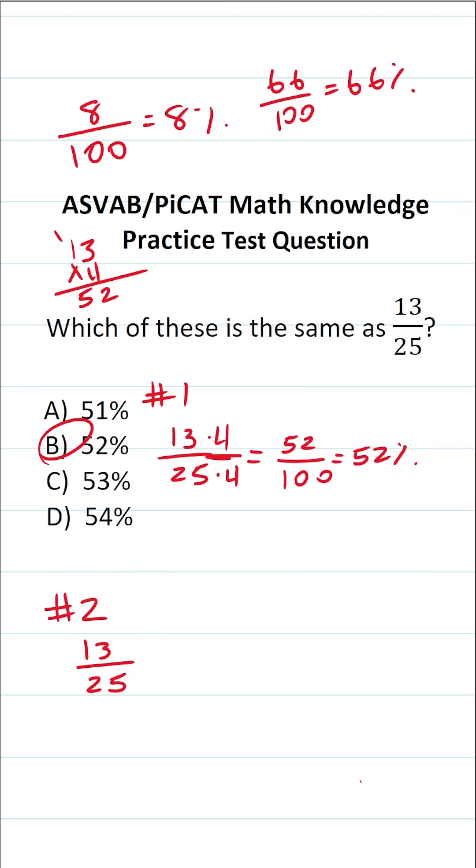So I could read 13 over 25 as 13 divided by 25. And by doing this long division, we'll have our answer. 25 doesn't go into 13. So I'm going to add a decimal and a zero placeholder. I'm going to bring that decimal into my answer. How many times does 25 go into 130?